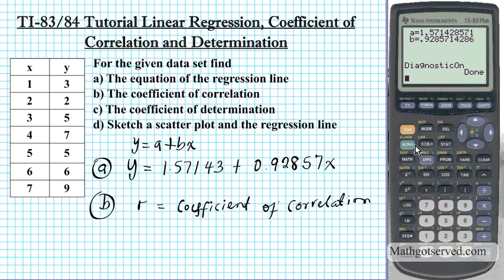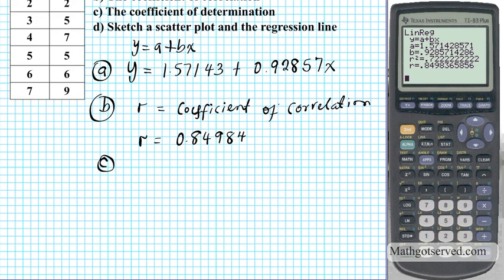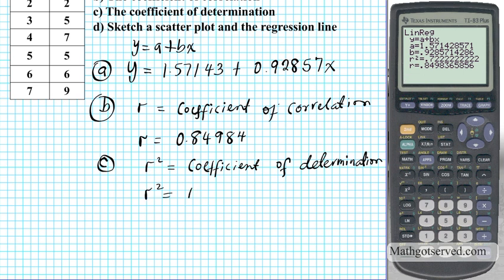Now I can call the linear regression command again using second function entry. Press enter — voilà. It gives me the same values as before, plus two new pieces of information. R is the coefficient of correlation — R equals 0.84984 to five decimal places. And R-squared is the coefficient of determination — R-squared equals 0.72345.